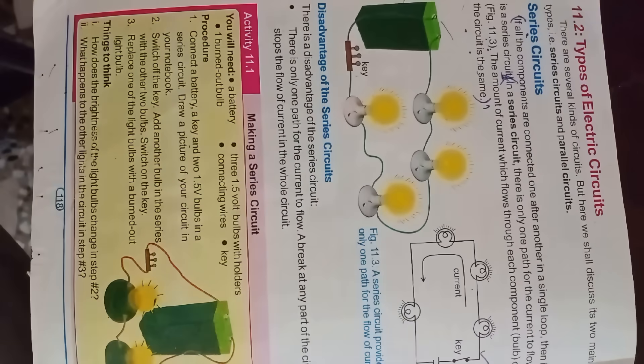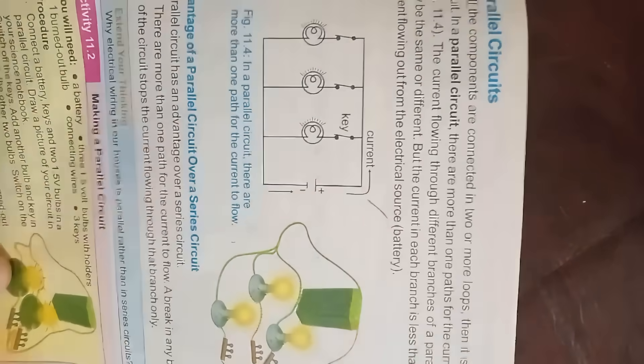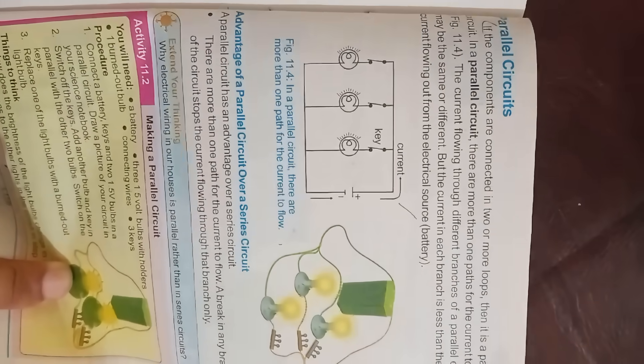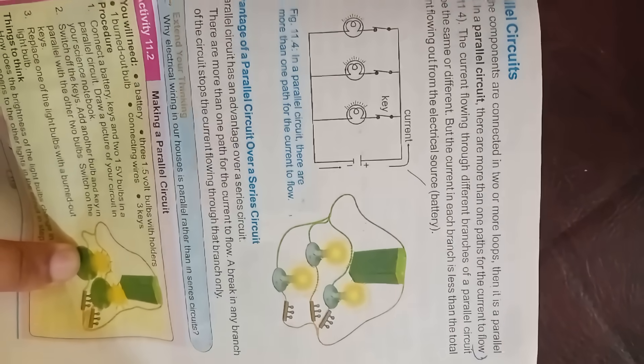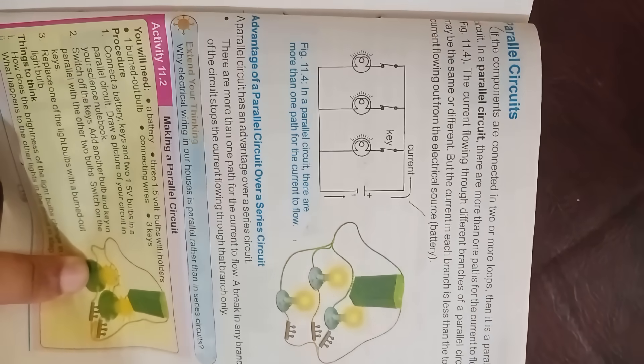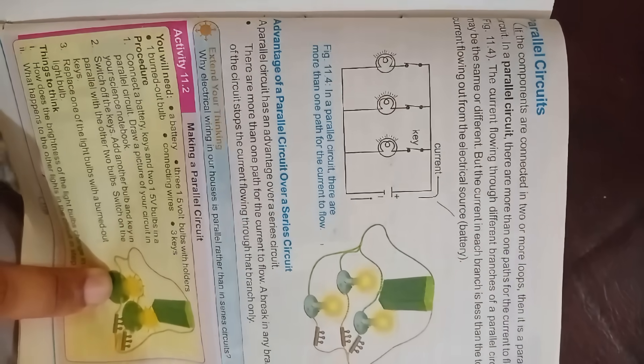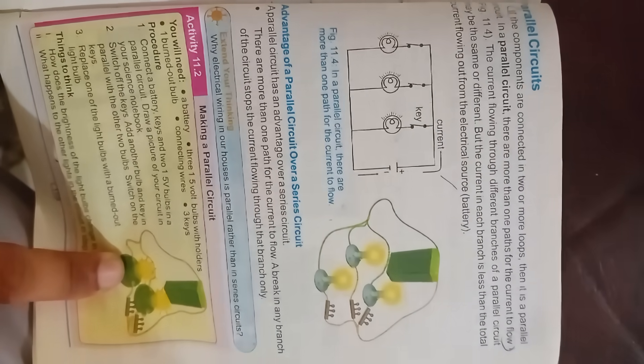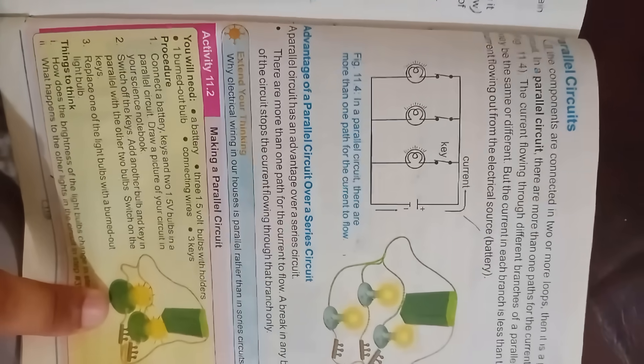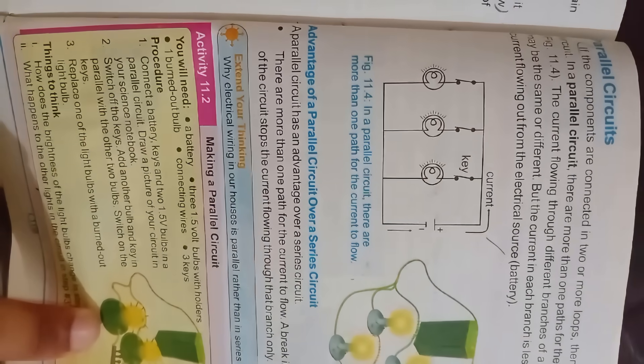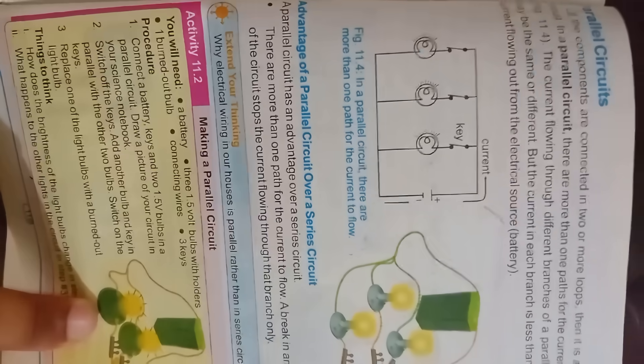Parallel circuit: if the components are connected in two or more loops, then it is a parallel circuit. In a parallel circuit there are more than one path for the current to flow. The current flowing through different branches may be the same or different, but the current in each branch is less than the total current flowing from the electrical source, as shown in the diagram.